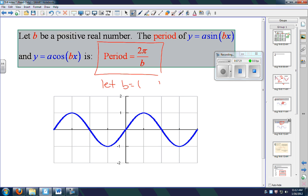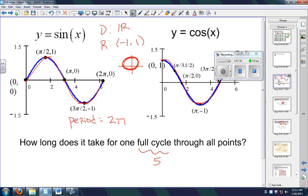So if you let b equal a value of 1, your period, 2π over 1 is 2π, which we said it takes 2π to get through all five points with these guys here. Notice a value is a 1 and b value is a 1. A value is a 1, b value is a 1. So these guys have an amplitude of 1.